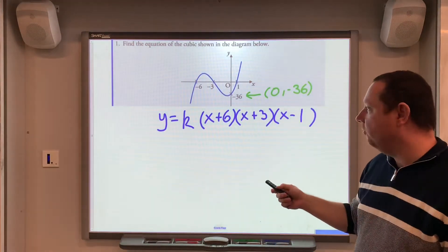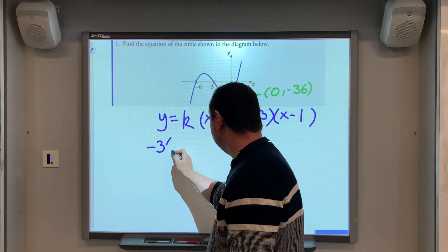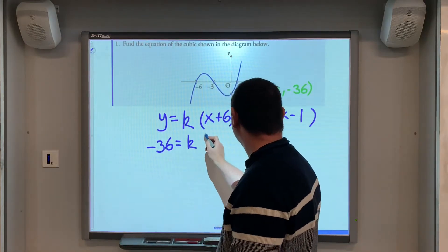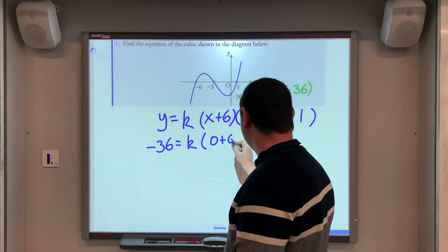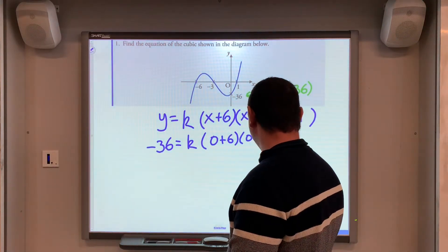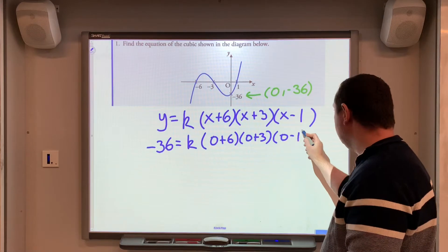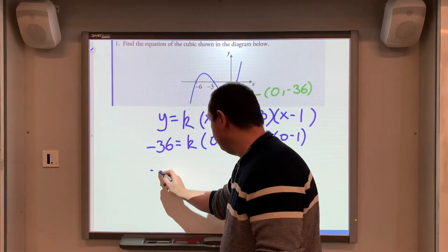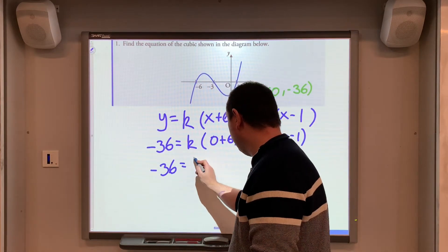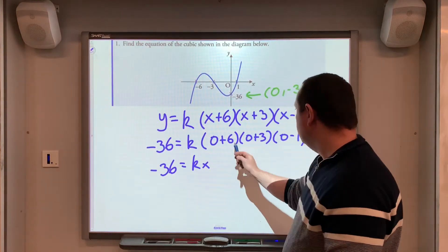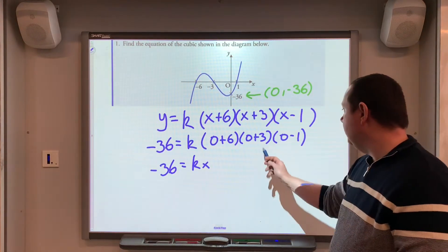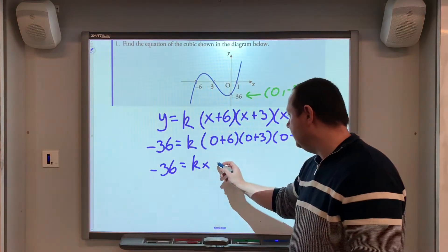and we'll be left with k just dropping out. So, minus 36 equals k times 0 plus 6, 0 plus 3, 0 minus 1, minus 36 equals k times 6 times 3 is 18, times minus 1 is minus 18.